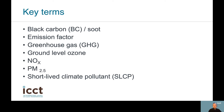PM2.5, or fine particles, or particulate matter with a diameter less than 2.5 micrometers, are a major class of air pollutants regulated worldwide. Short-lived climate pollutants are chemical species that stay in the air for relatively short periods of time but have strong effects on warming the climate. In our example, black carbon is one of those short-lived climate pollutants.